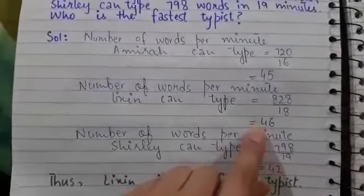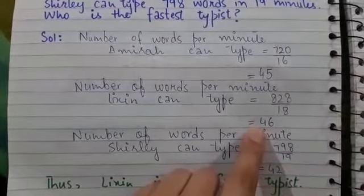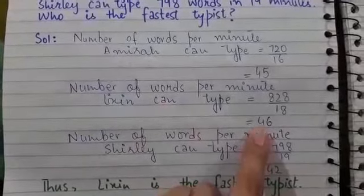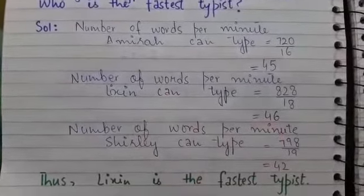The larger the number of words, the faster the typing is. As Lixen has the greatest number of words per minute, Lixen is the fastest typist.